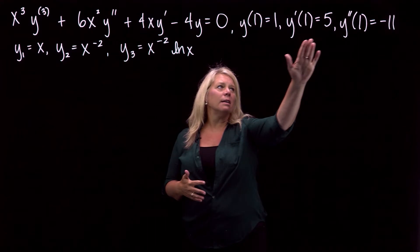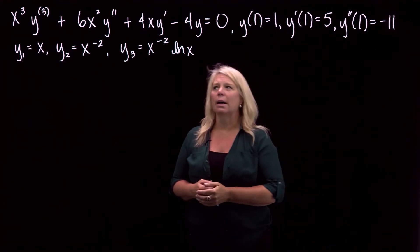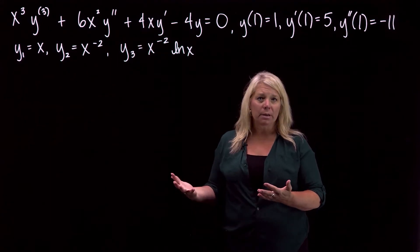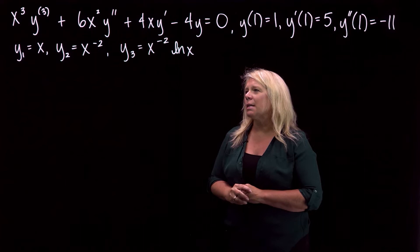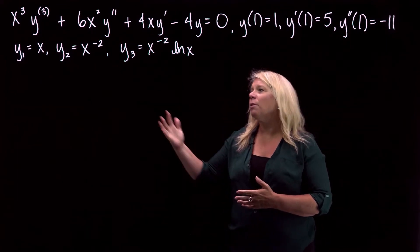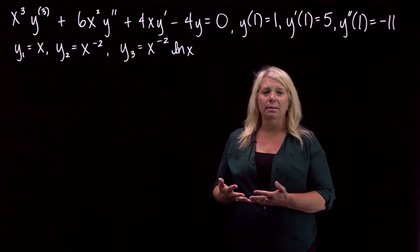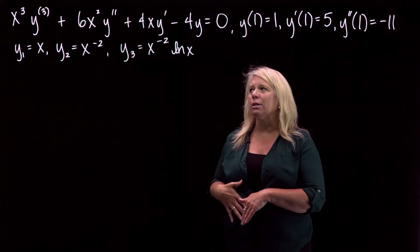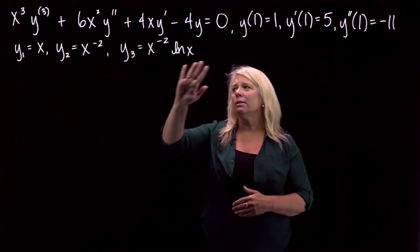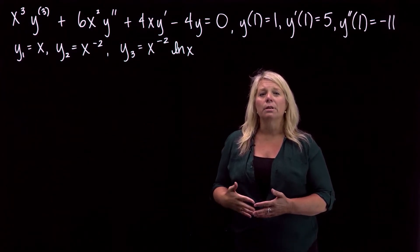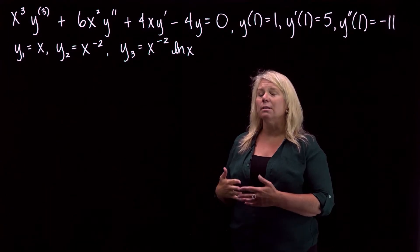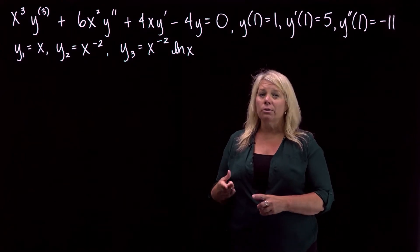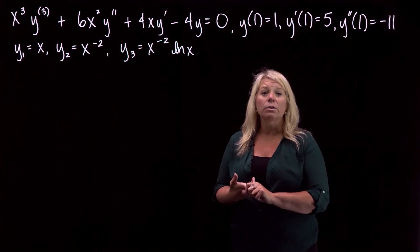We're given three initial conditions, all given at x equals one. We're also given three functions, and the textbook tells us these are linearly independent solutions to the differential equation. You could verify they are solutions by taking the appropriate derivatives and plugging them in. To verify linear independence, you could use the definition or the Wronskian.